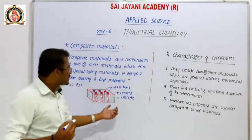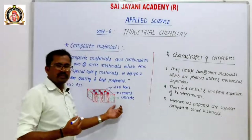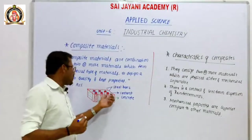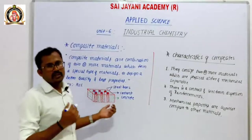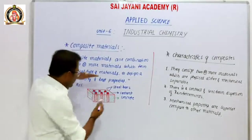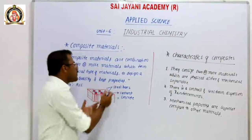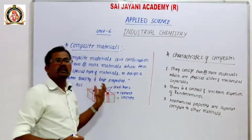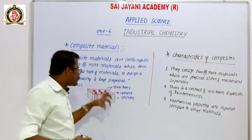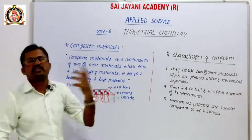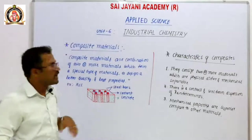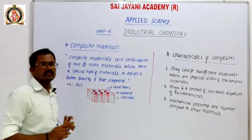Cement is one type of material and steel is another type of material. The combination of these two materials — steel bars and cement — makes it a composite material.